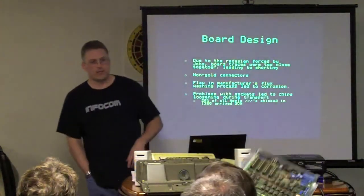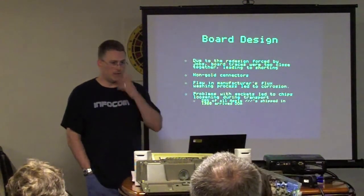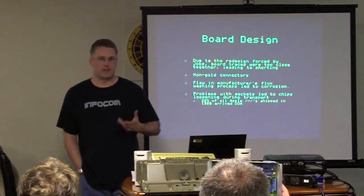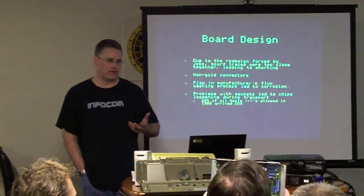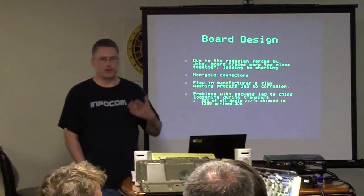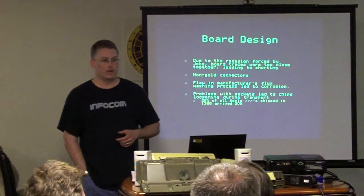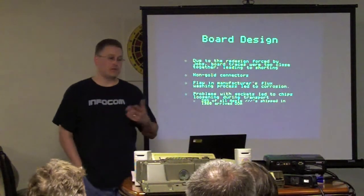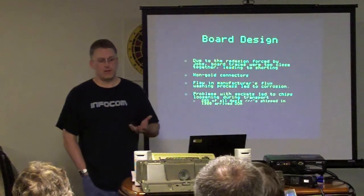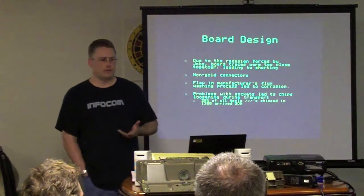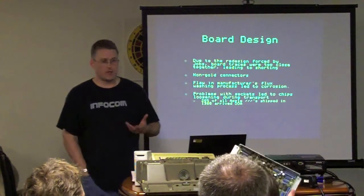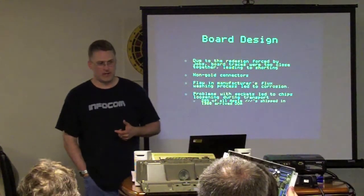Board design was another problem users complained about. Because of the case design Jobs forced on the engineering team, they ended up with a much denser final product. Early versions had traces too close together, leading to shorting and heat buildup. They used non-gold connectors. There was a flaw in the manufacturer's flex-washing product that led to corrosion in the motherboard. And because of the weight of the machine, vibrations during transport often loosened the chips during shipping. Because of that, 20% of all initial Apple IIIs shipped in 1980 arrived defective.